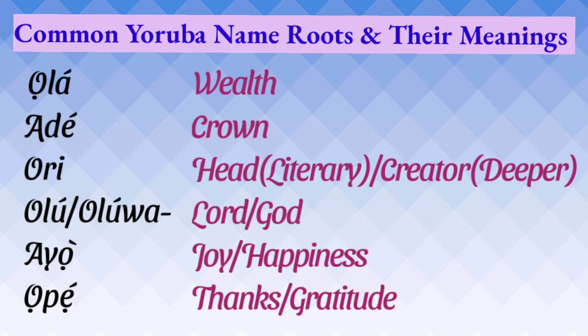Let's look at the most common Yoruba name roots and their meanings. Ola means wealth, riches. Ade means crown. Ori is head — that's the literary interpretation, but the deeper meaning refers to creator. Olu or Oluwa is lord, also referring to God. Ayo is joy or happiness. Okwe is thanks or gratitude. So you can say: Ola Wale, Ade Wale, Ade Ola, Uri Yomi, Oluwa Femi, Ayo Bami, Okwe Oluwa.